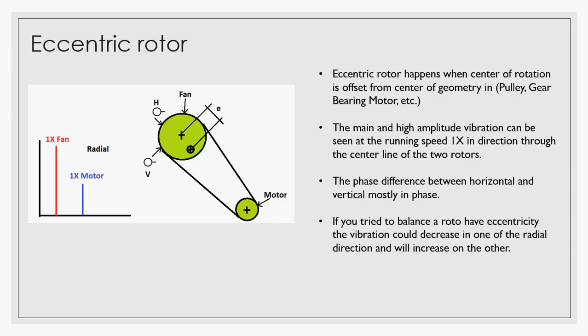The main and high amplitude vibration can be seen at the running speed 1X in the direction through the centerline of the two rotors. The phase difference between the horizontal and the vertical will be in phase, as you can see here the vertical of the bearing and the horizontal will be in line with the belt.